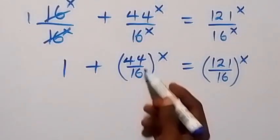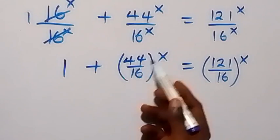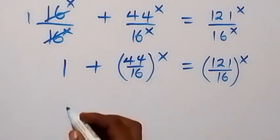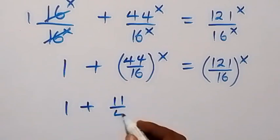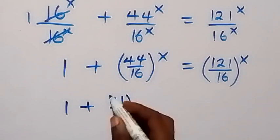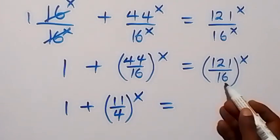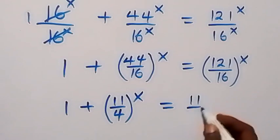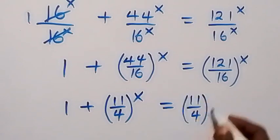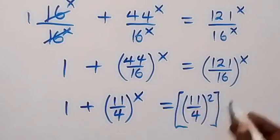We can reduce the fraction inside. 4 goes into 44 and 4 goes into 16, so that becomes 1 plus (11/4) raised to power x. On the right side, we can express 121 as 11 squared and 16 as 4 squared, so we have (11/4) all squared, raised to power x.